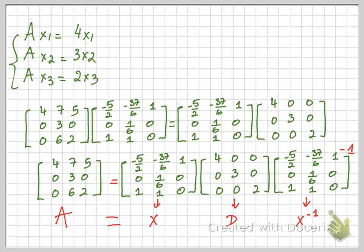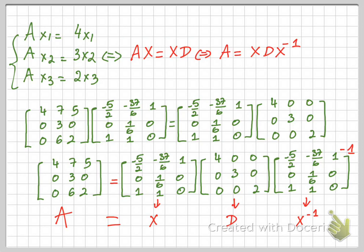We can rewrite the system as A·X = X·D, and solve for A by multiplying both sides on the right by X inverse to get A = X·D·X⁻¹. If a matrix A can be written in this form — where D is a diagonal matrix sandwiched between X and X inverse — then A is called a diagonalizable matrix.